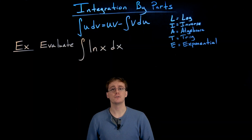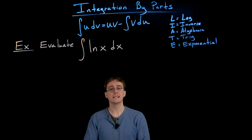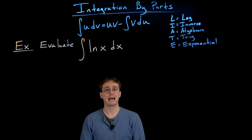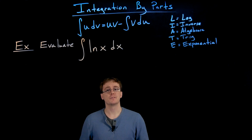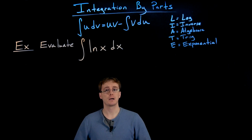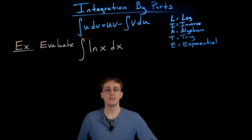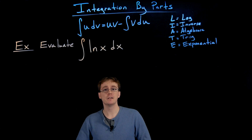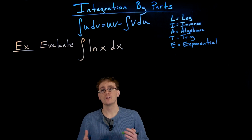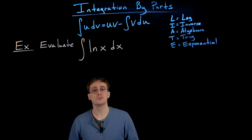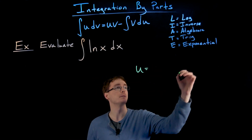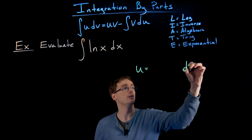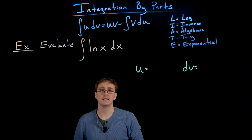In this next example we're evaluating the indefinite integral of the natural log of x. Let's assume we've decided to use our integration by parts formula to find this antiderivative. The first step is identifying the starting pieces u and dv.